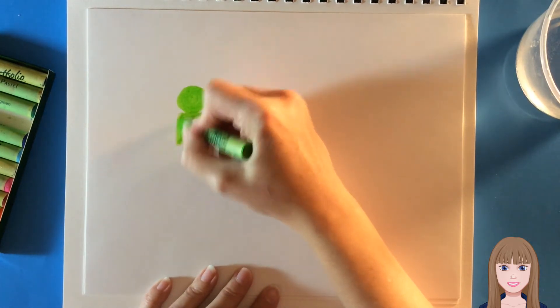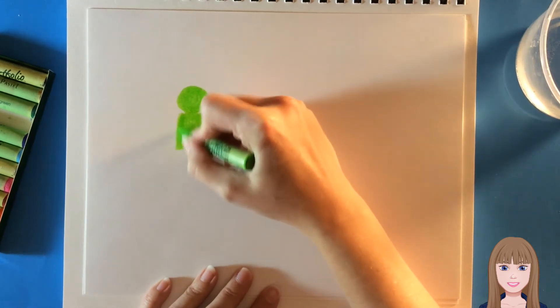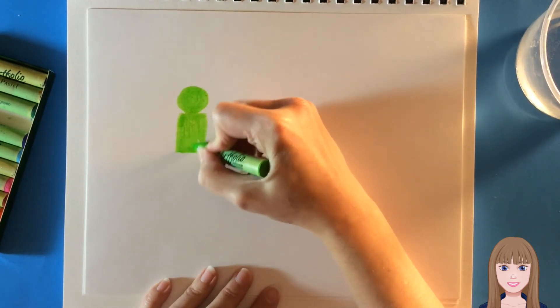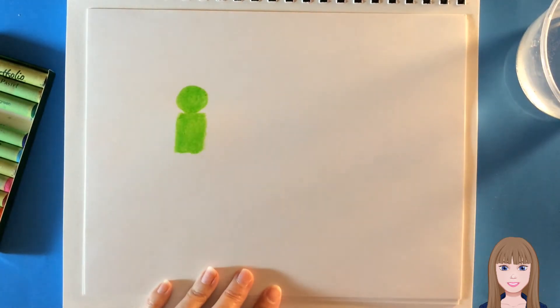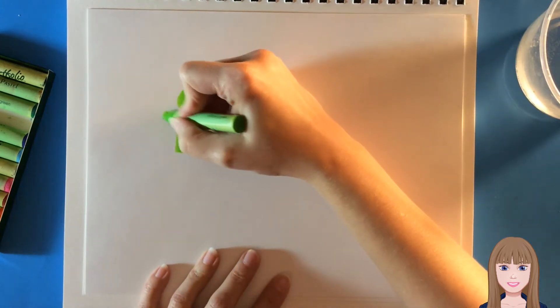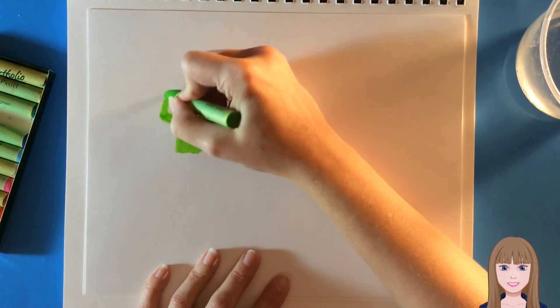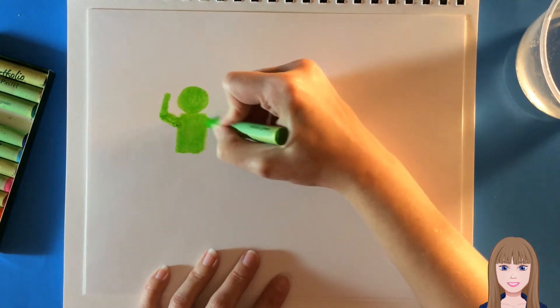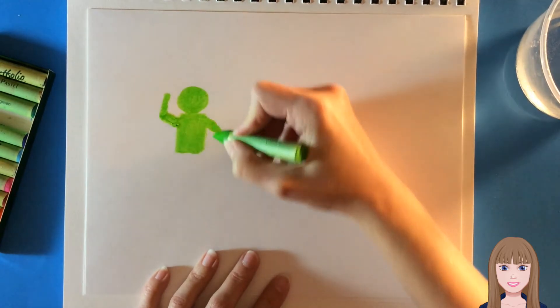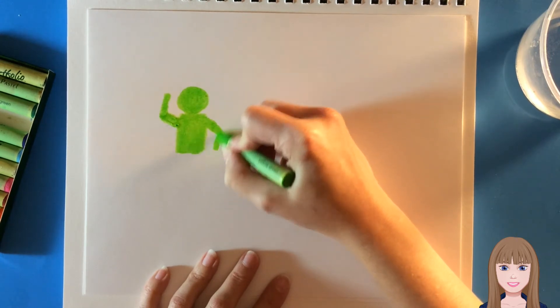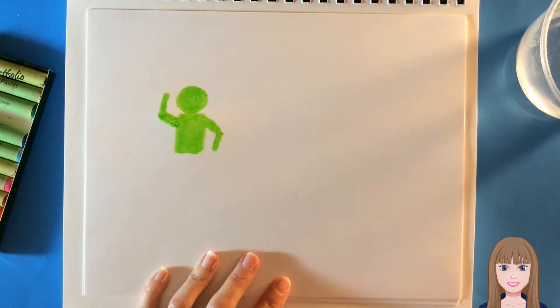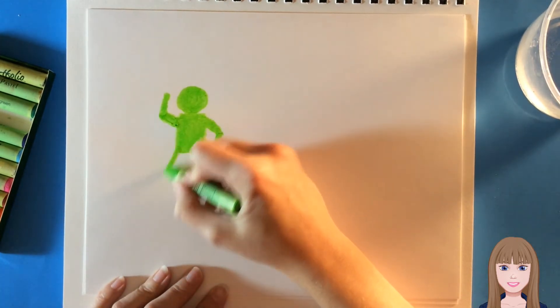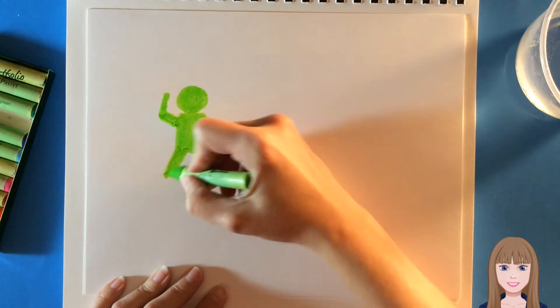I'm going to use a bit of a box or rectangle shape for the body. And our arms are also going to use rectangle shapes bending at the elbow. And this is going to show us how our figure is moving.